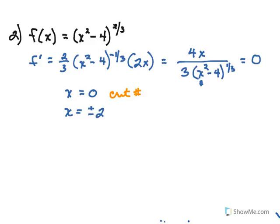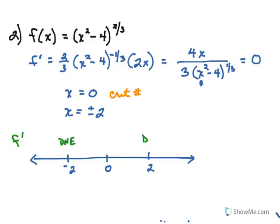So let's think of our number line analysis. I have 3 numbers to put on here — remember, I want to do them in order: negative 2, 0, and 2. The derivative does not exist at negative 2 and 2, and the derivative equals 0 at 0. If we substitute something less than negative 2, say negative 3, we get a negative. If we choose something between negative 2 and 0, such as negative 1, we get a positive. Between 0 and 2, perhaps 1, we get a negative. And anything larger than 2 gives us a positive.